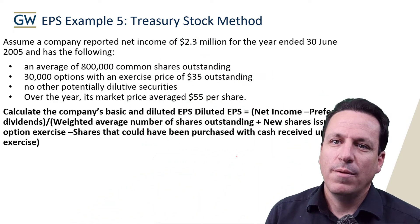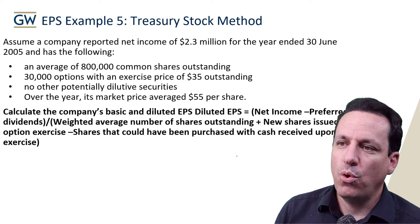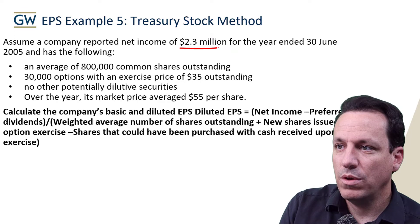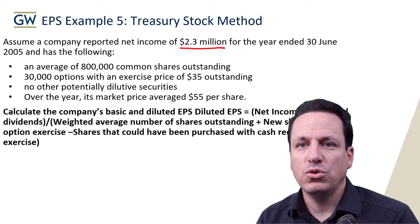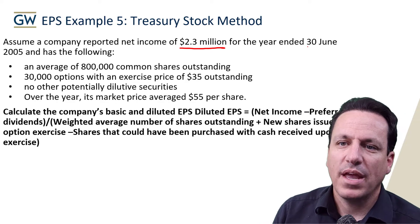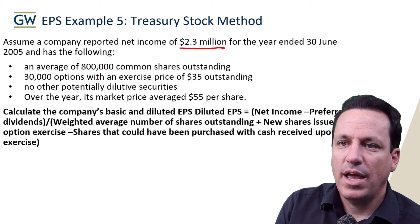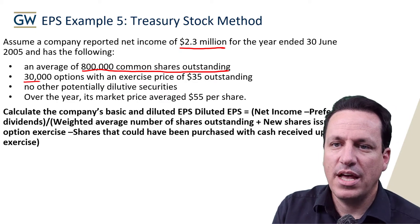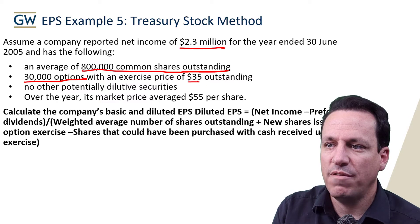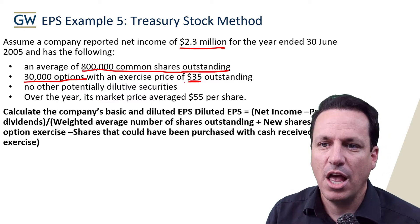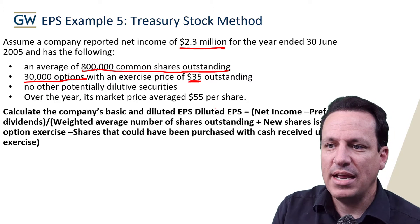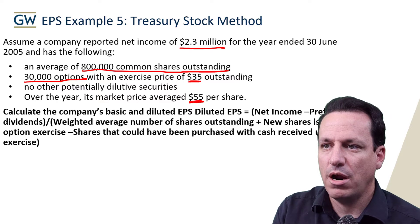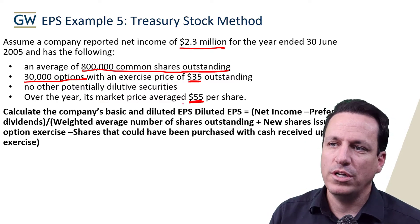The treasury stock method: the company reported net income of $2.3 million for the year ended June 30th, 2005. It also had an average of 800,000 common shares outstanding, 30,000 options with an exercise price of $35 outstanding, no other potentially dilutive securities, and a market price that averaged $55 per share. Calculate the basic and diluted earnings per share.